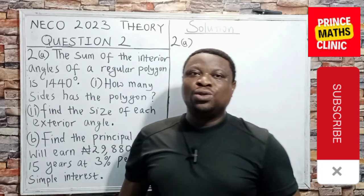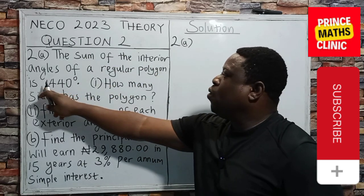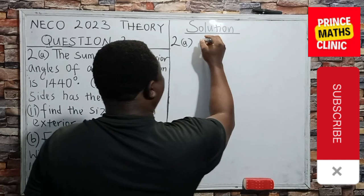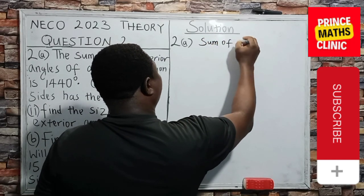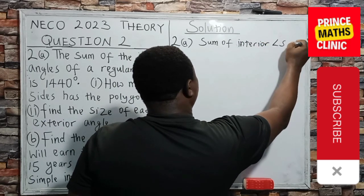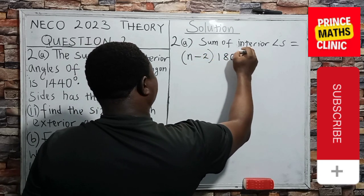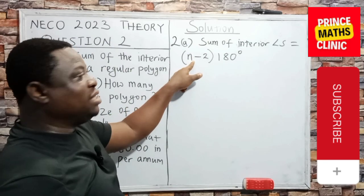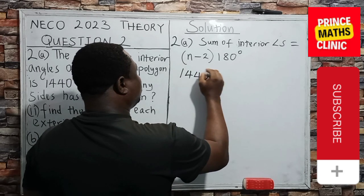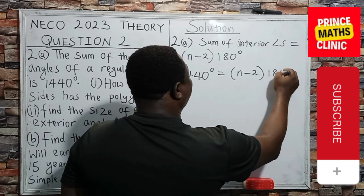Therefore, let's go into the solution to number 2A. We were told that the sum of the interior angles of a regular polygon is 1,440 degrees. The first part is to find how many sides the polygon has. We have to say that the sum of the interior angles is given by this formula: (N minus 2) times 180 degrees. This N talks about the number of sides. And we have been given the sum to be 1,440. So I'll put that here: 1,440 degrees. Then I have N minus 2 multiplied by 180 degrees.